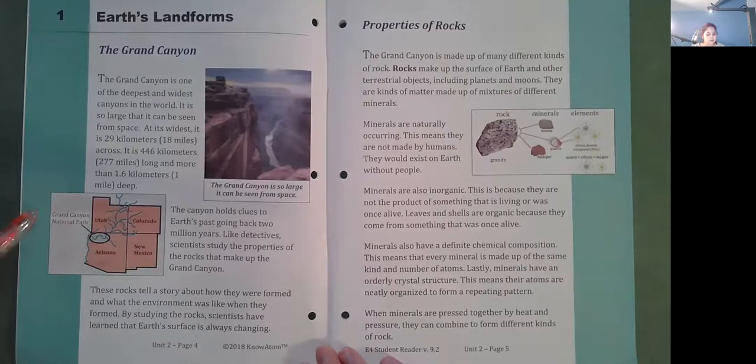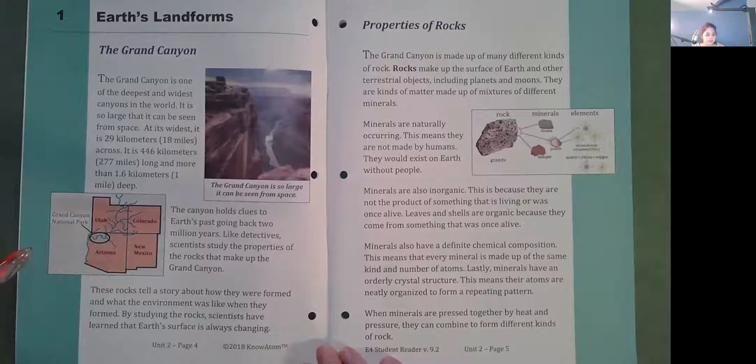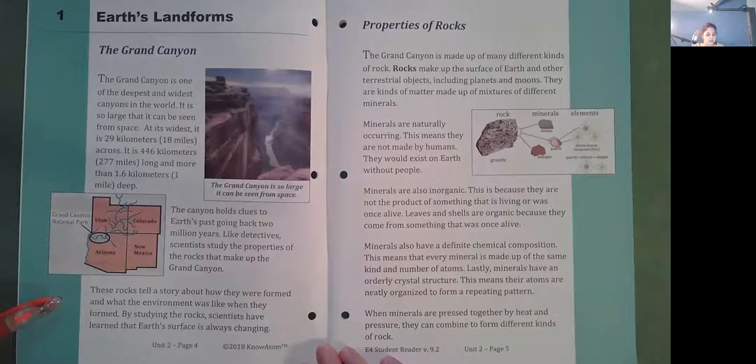The canyon holds clues to Earth's past going back two million years. Like detectives, scientists study the properties of the rocks that make up the Grand Canyon. These rocks tell a story about how they were formed and what the environment was like when they were formed. By studying the rocks, scientists have learned that Earth's surface is always changing.